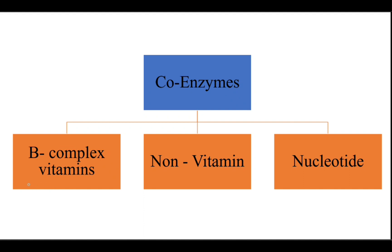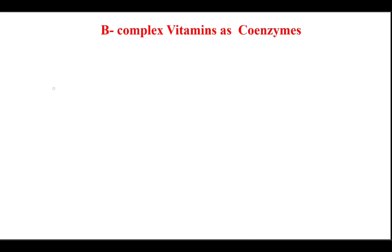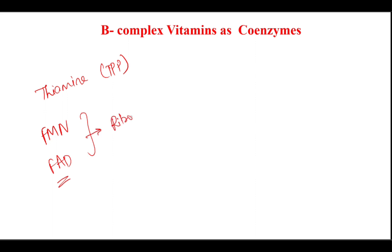Coenzymes are of different types: B-complex vitamins acting as coenzymes, non-vitamins acting as coenzymes, and nucleotides acting as coenzymes. Some examples of B-complex vitamins acting as coenzymes are thiamine (vitamin B1), where thiamine pyrophosphate acts as a coenzyme; flavin mononucleotide (FMN) and flavin adenine dinucleotide (FAD), both derived from riboflavin (vitamin B2); and nicotinamide adenine dinucleotide, derived from vitamin B3, that is niacin.